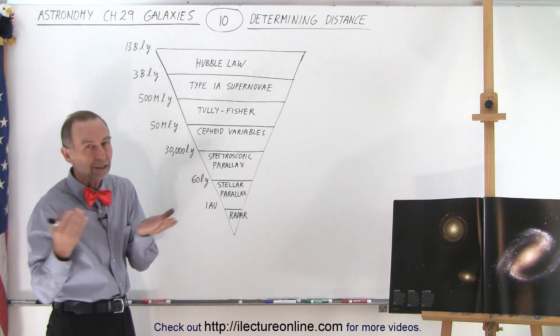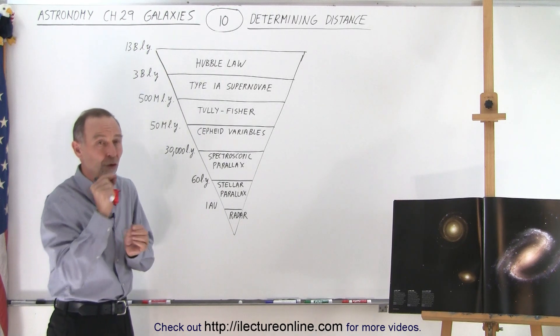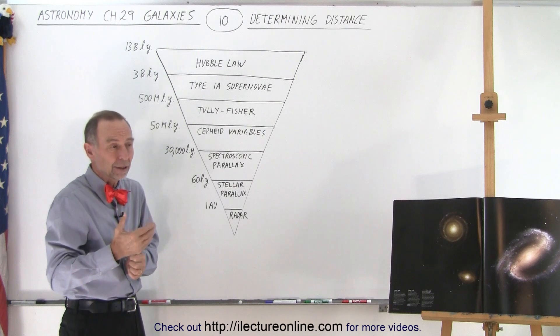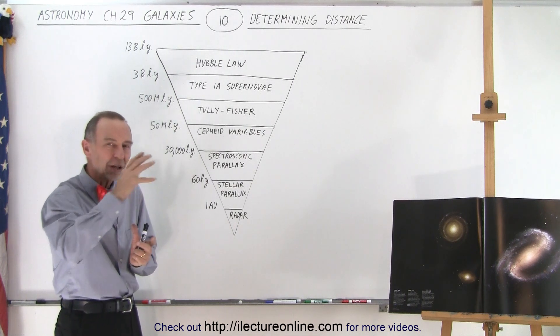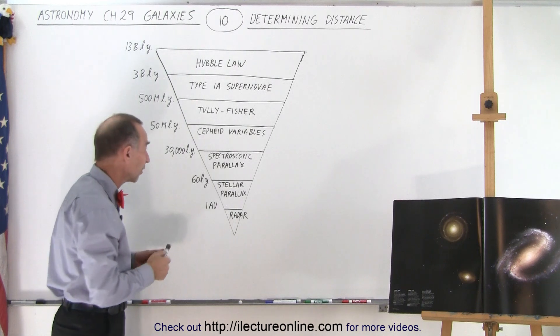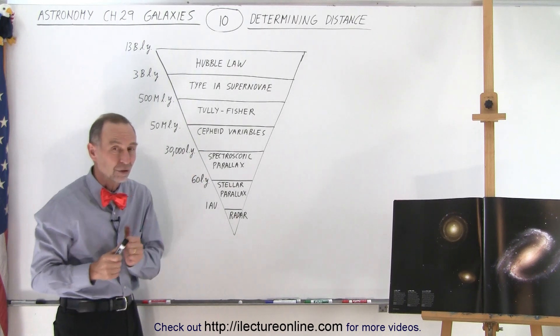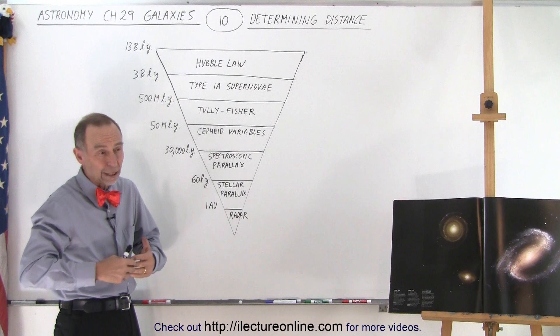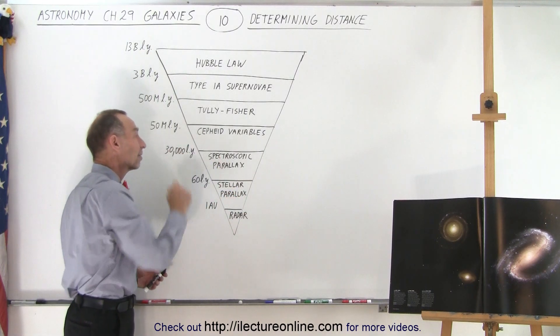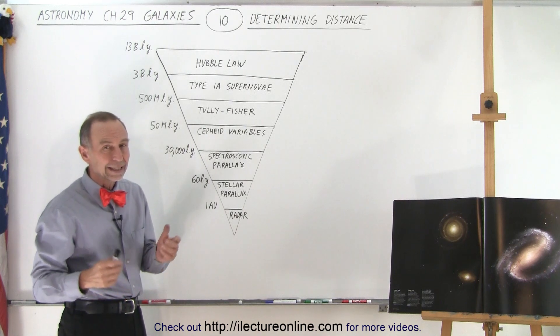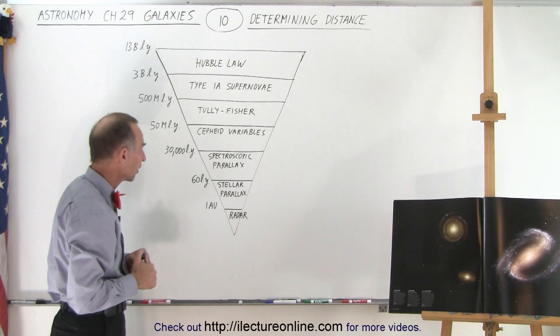If we can pick out a dozen or so Cepheid variables in a particular galaxy, by averaging the results, we can determine the distance to those galaxies. For a great number of galaxies within 50 million light years, we can determine distance by simply measuring the periodicity of the Cepheid variables.